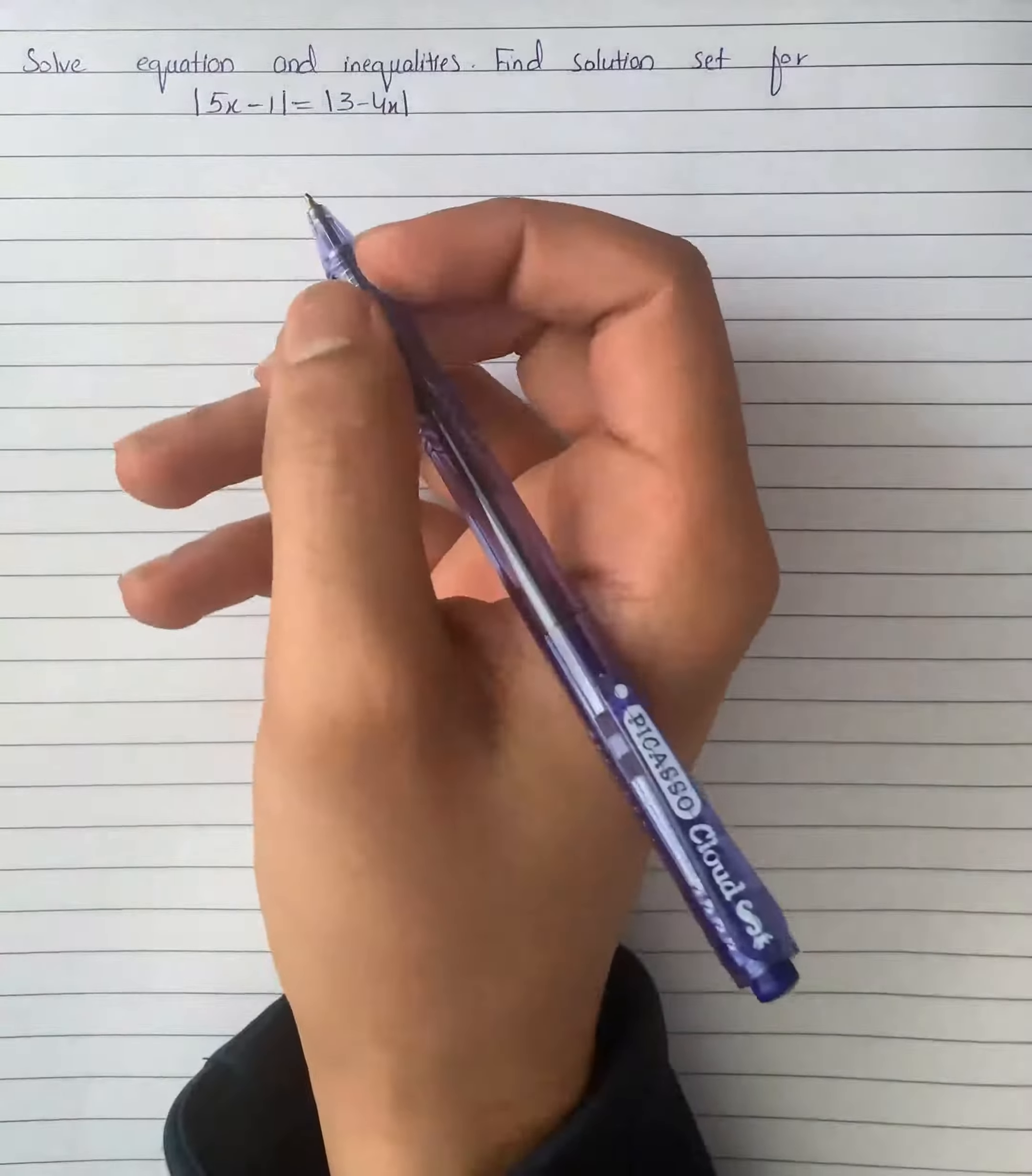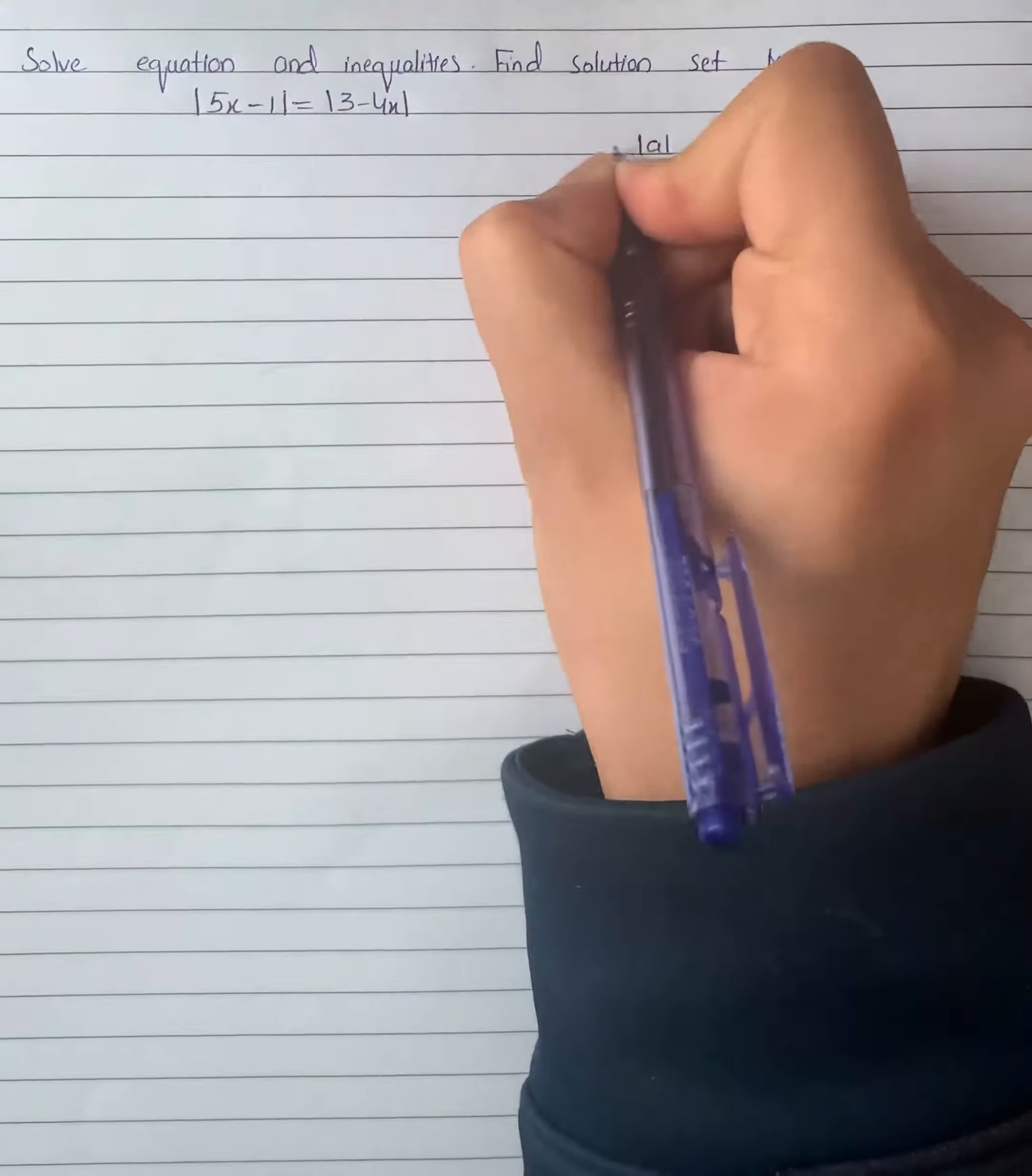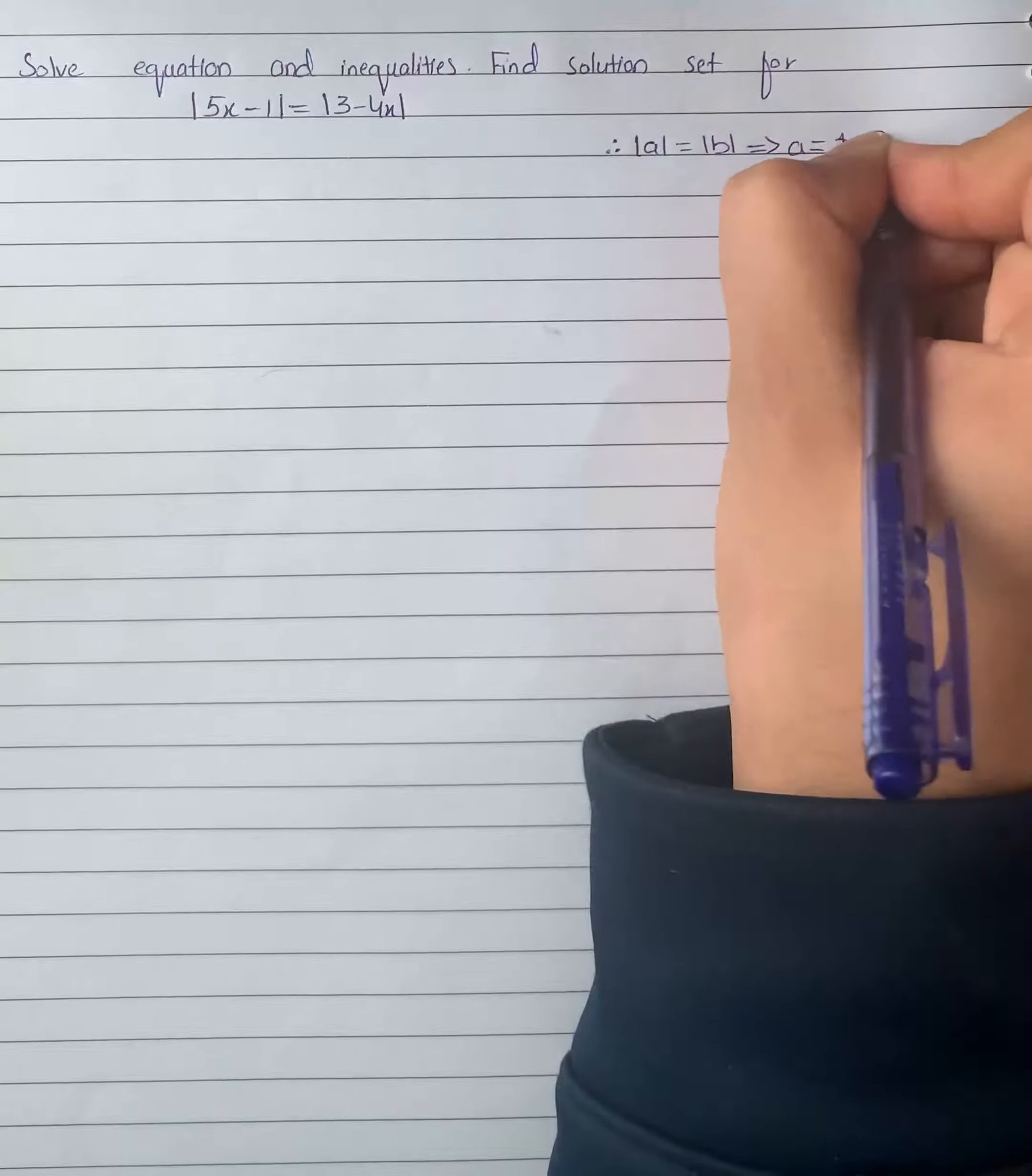Here we have an equation and we have to find the set of solutions for the equation |5x - 1| = |3 - 4x|. So as we know that |a| = |b| gives us a equals to plus or minus b.